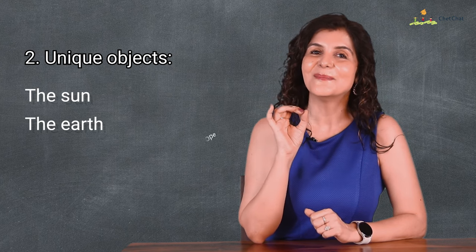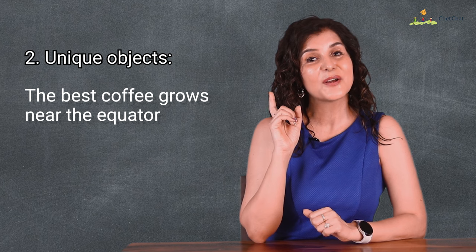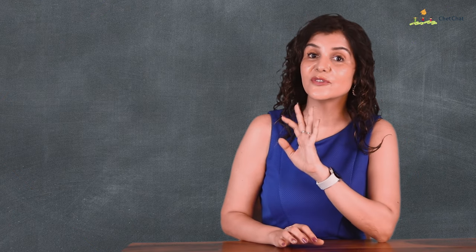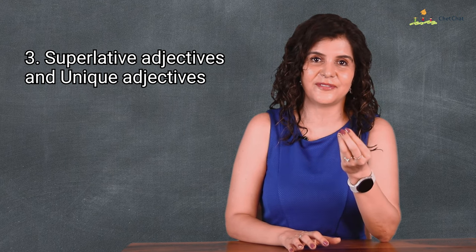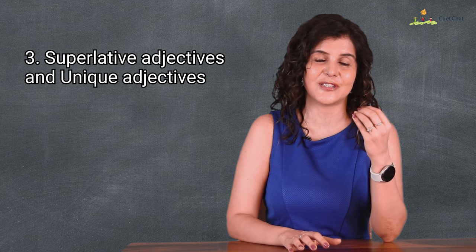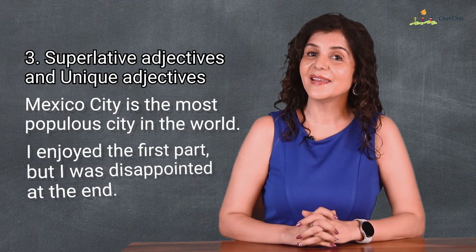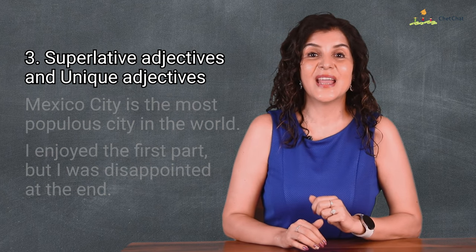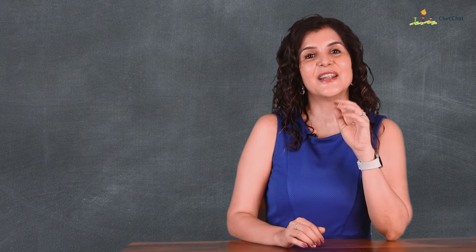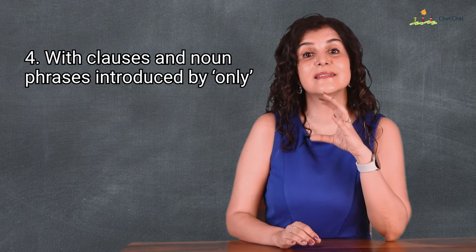The second group of specific nouns refers to unique objects: the sun, the earth, the Pope, the sky, the equator — the best coffee grows near the equator. The third type is nouns with a superlative or unique adjective, since there can only be one: Mexico City is the most populous city in the world; I enjoyed the first part but was disappointed at the end; she is the principal researcher. The fourth type is nouns with clauses introduced by only: my aunt is the only person I trust; is this the only bowl you have?